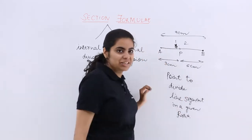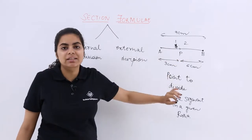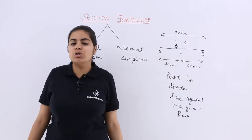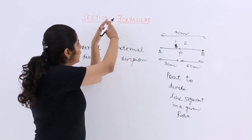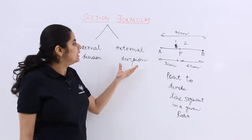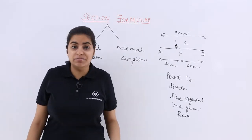Now my dear friends, this case is of internal division because the point is situated on the line segment and it will divide it internally. So there can be 2 divisions possible: one is your internal division, the other is external division.